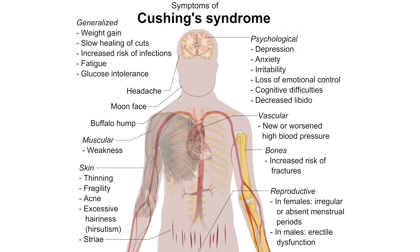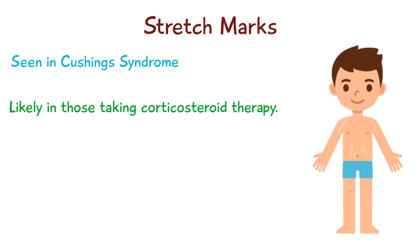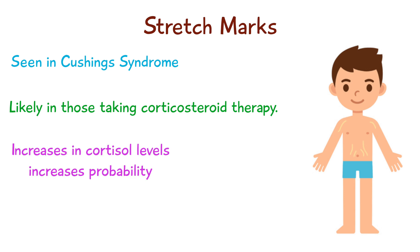Stretch marks are one of the features of Cushing's disease, and they may be induced by local or systemic corticosteroid therapy. Any increase in cortisone levels can increase the probability of stretch marks by reducing the pliability of the skin.